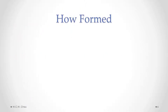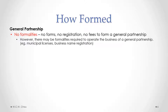Once we have two or more persons carrying on a business together with a view to profit — those are the requirements — once those requirements are met, we automatically have a general partnership. There's no need to satisfy any other formalities like filling out forms, registering anything, or paying any fees. However, there may be some formalities required to actually operate the business, which could include getting municipal business licenses and registering the business name.